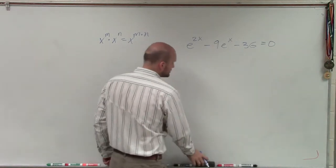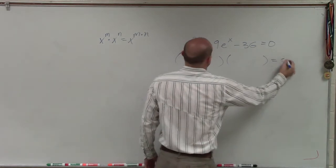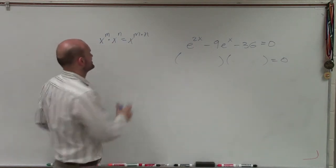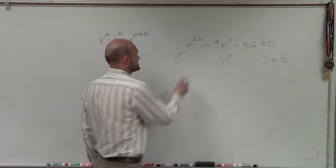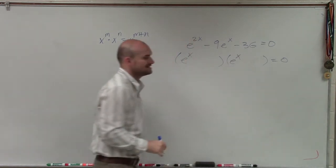So what I want to do is be able to determine what two values now are going to multiply to give me e to the 2x. Now, remember, when you're multiplying with your exponents, you're going to add your exponents. So therefore, I know that this is going to be e to the x times e to the x.